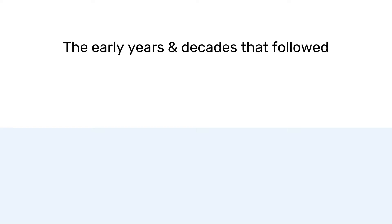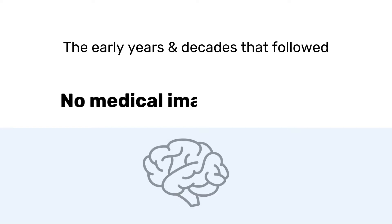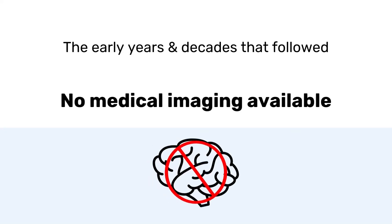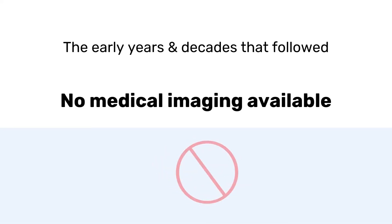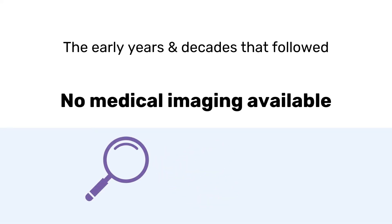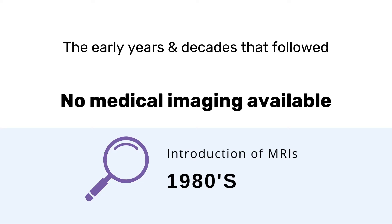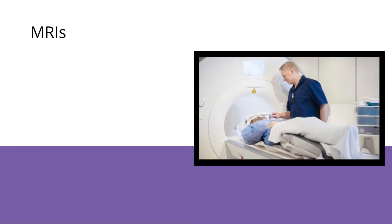It's important to keep in mind that during these early years, and the decades that followed, there was no medical imaging available to look at people's brains. So while Chiari had been identified, until the introduction of MRIs in the 1980s, it was very difficult to diagnose. However, MRIs changed everything.